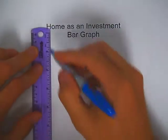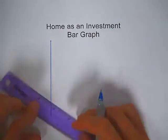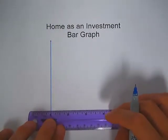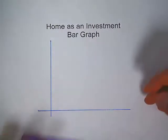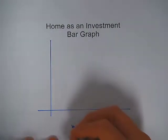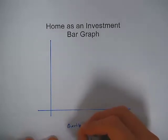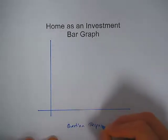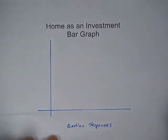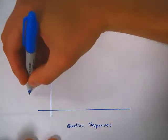Now I'm going to show you how to make a bar graph for that study data. First, we need to make a set of axes — an x and a y axis. I'll use a ruler. The x-axis is going to represent our question responses, and the y-axis is going to represent frequency.